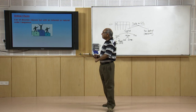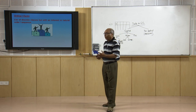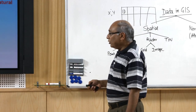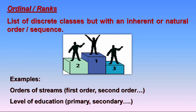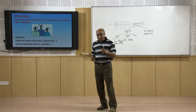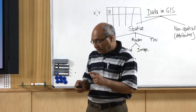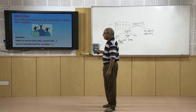The second attribute type is ordinal or ranks. As the name implies, it must have an order — a list of discrete classes with an inherent or natural order or sequence. As the diagram also shows, you may have first ranking, second ranking, third ranking — there is an order and meaning between first and second, and between first and third. Examples in earth sciences include stream order: first order, second order, third order. When we say third order streams, we know two higher order streams also exist. There is an inherent natural sequence in the data.